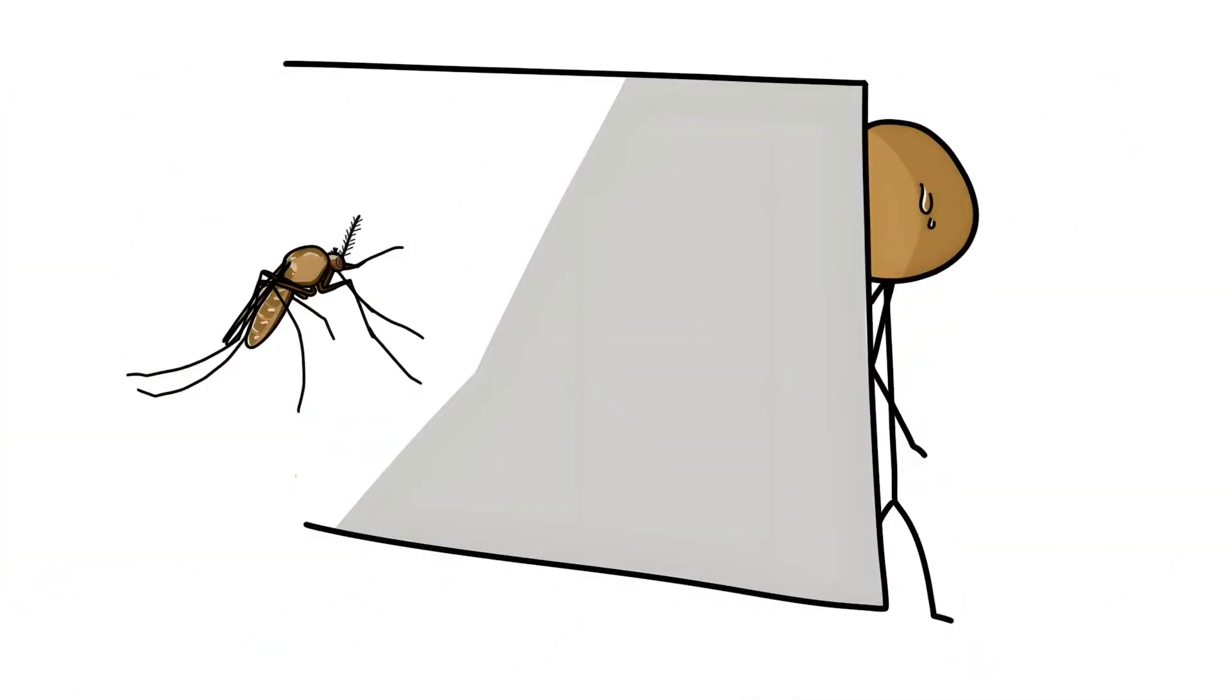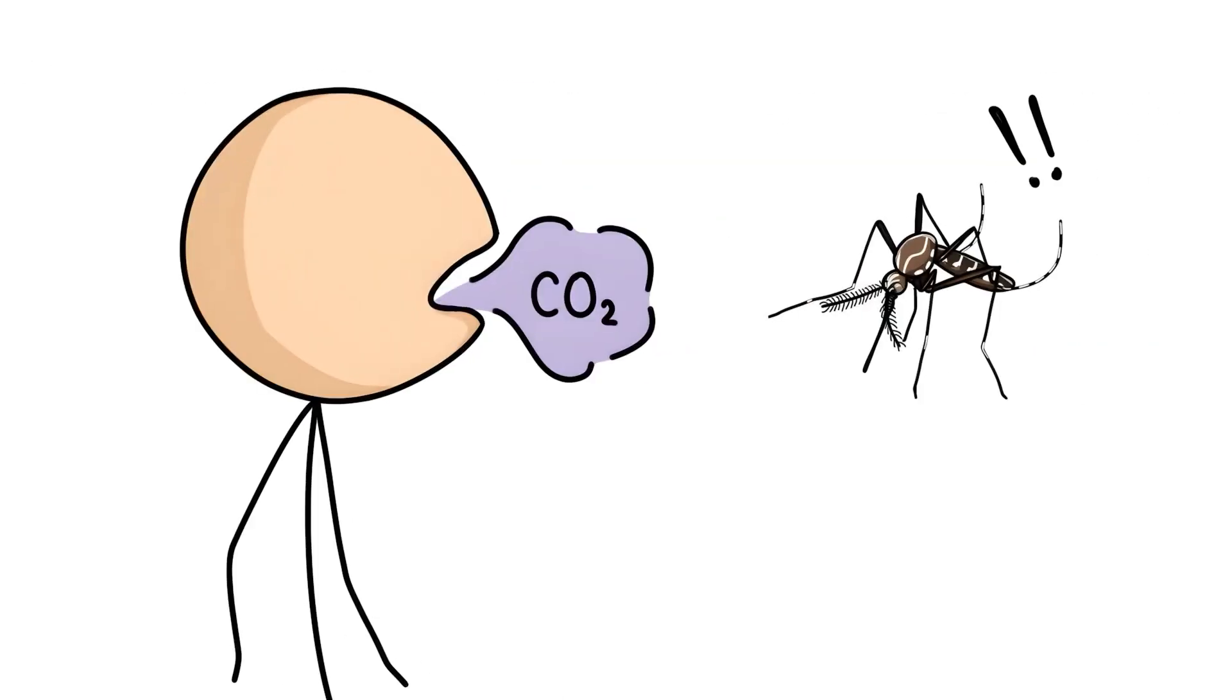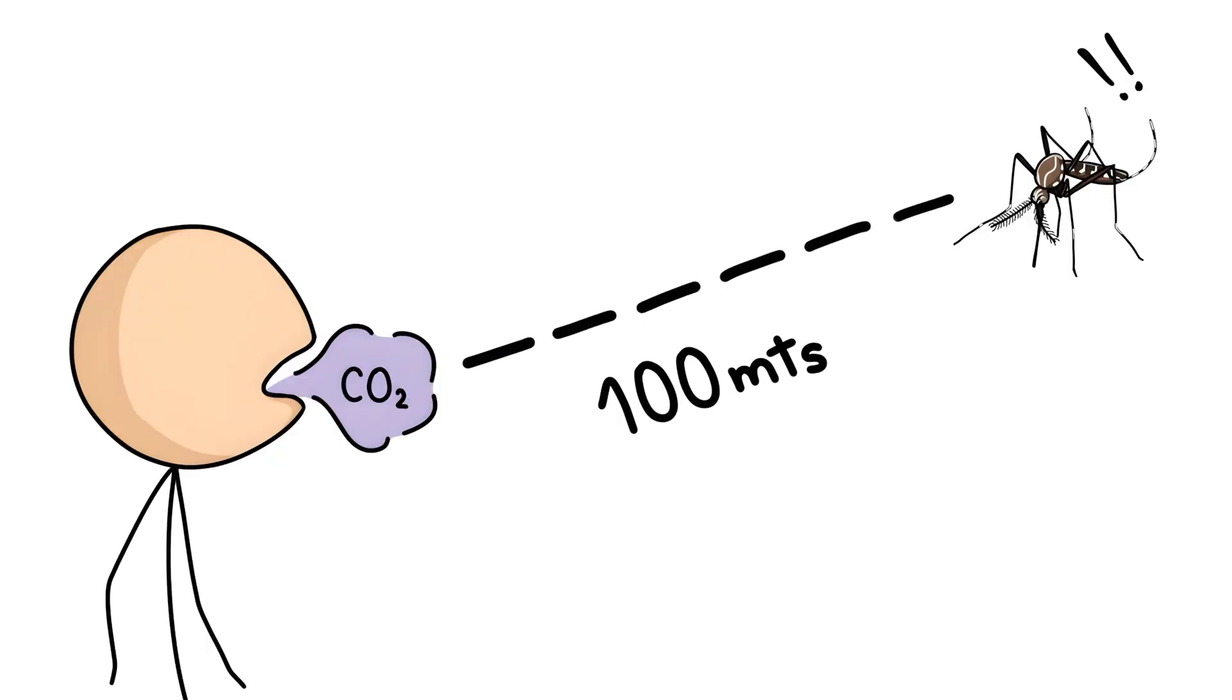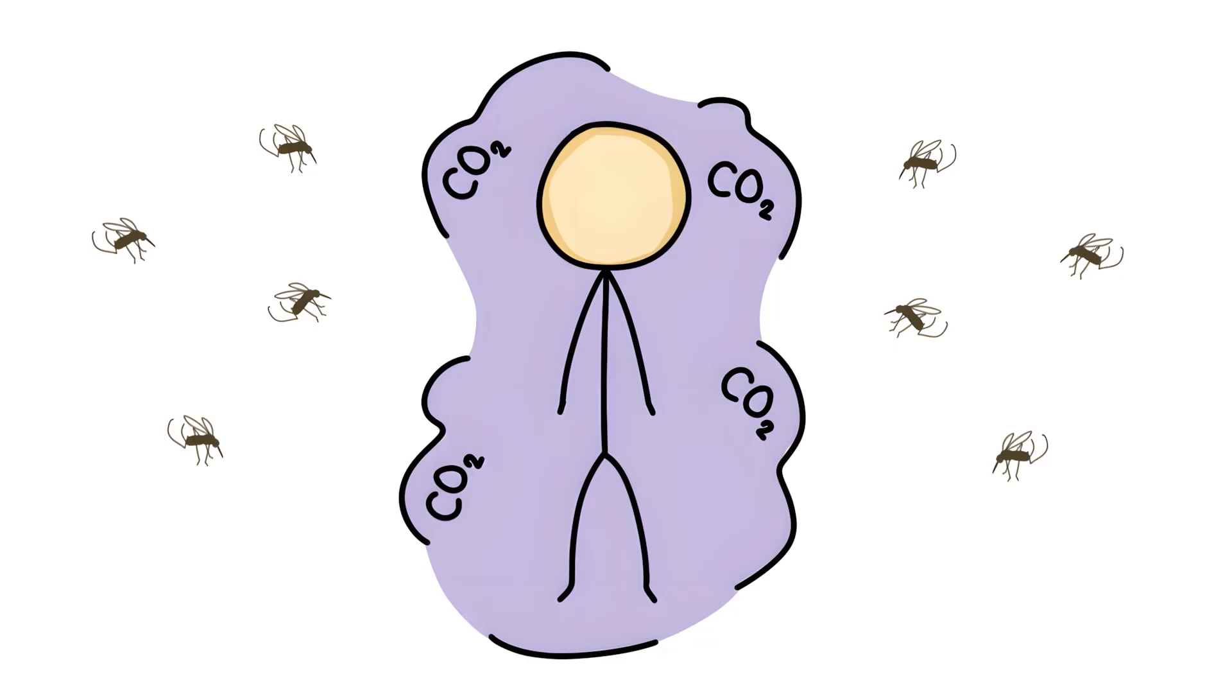But how do these little things find us in the first place? The first thing the mosquitoes notice about us is the carbon dioxide that humans exhale. Mosquitoes can smell this from up to 100 meters away. The carbon dioxide cloud that surrounds us lets the mosquito know that a living creature is nearby.